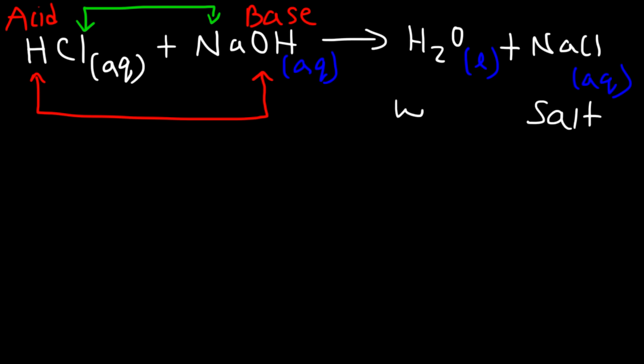In addition to being a double replacement reaction, this has another name. Sulfuric acid is a strong acid and potassium hydroxide is a strong base. They react to form potassium sulfate — a type of salt — and water. Almost all ionic compounds are considered salts. So this is called an acid-base neutralization reaction. When you mix an acid and a base and get liquid water and salt, it's an acid-base neutralization reaction.